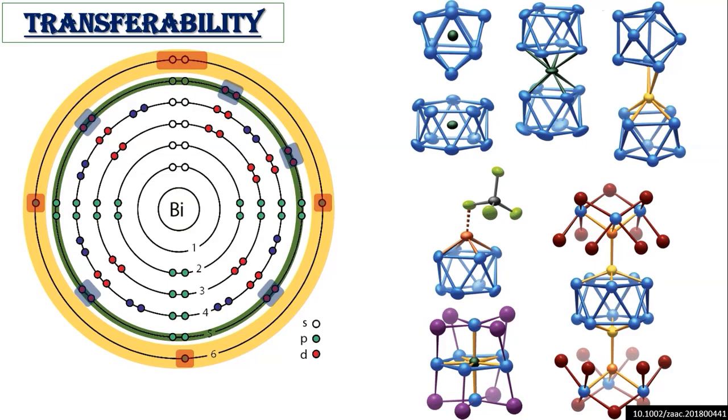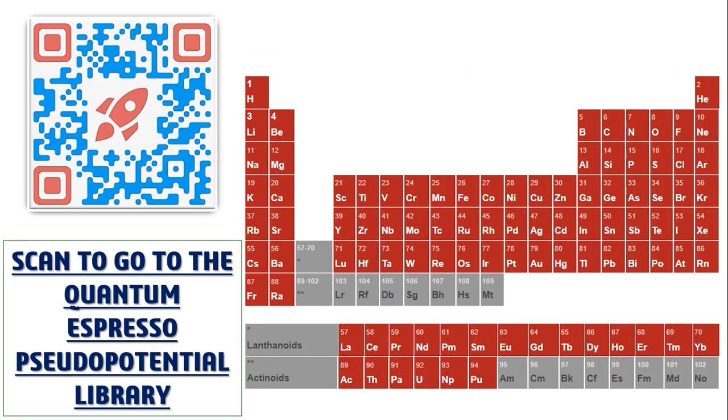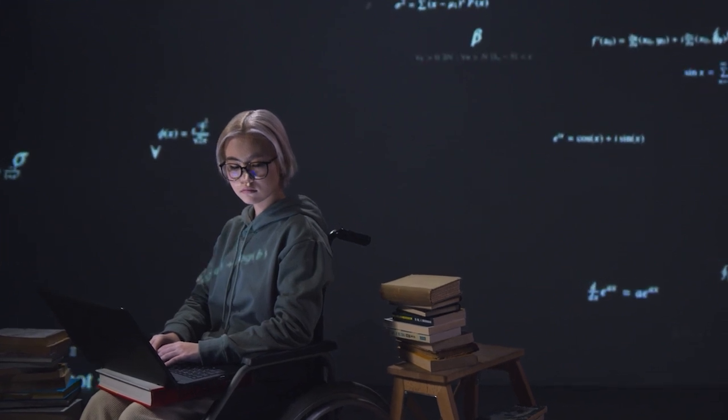Current DFT codes typically provide a library of pseudopotentials that includes an entry for each, at least most, elements in the periodic table. I feel you are already having a sense that now you are quite smart fellow in DFT.